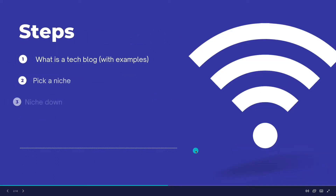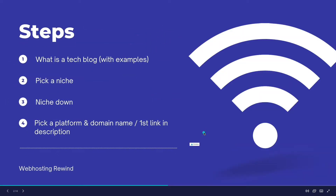What we're going to cover today: what is a tech blog with a few examples, how to pick a niche and niche down. I'll walk you through setting up your WordPress website using the first link in the description. You're going to need a domain name and web hosting. When you click that first link you can get your domain name free for the first year, and it takes less than 10 minutes.